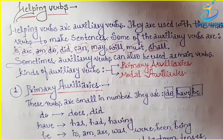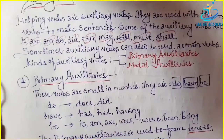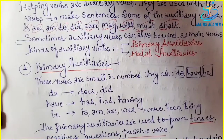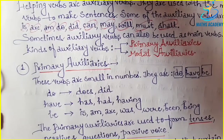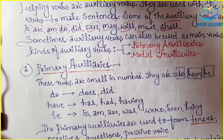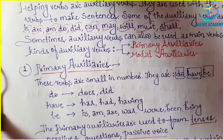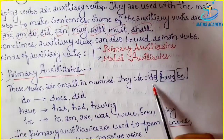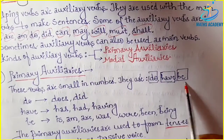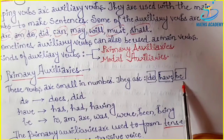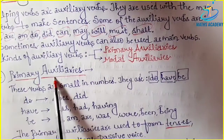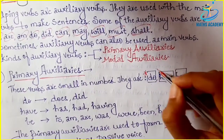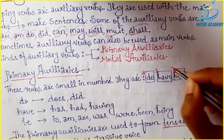So what are primary auxiliaries? These verbs are small in number. Examples are: do, have, and be. Only three types of primary auxiliaries — do, have, and be.